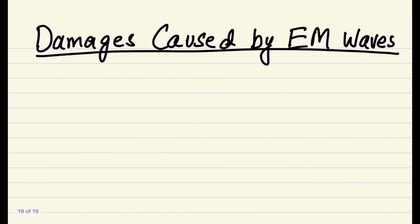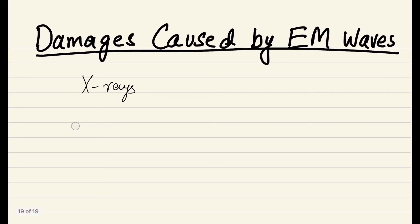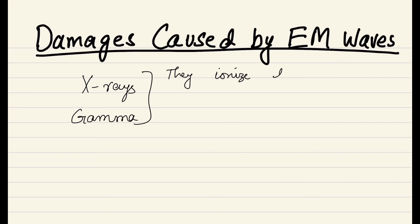Now we will see the damages that are caused by the electromagnetic waves. The biggest damage is caused by X-rays and gamma rays. X-rays and gamma rays are very harmful — if you expose yourself to these two types of rays, you will be more likely to have cancer. They basically ionize the atoms in the human cells in the human body.